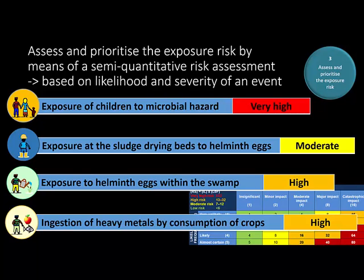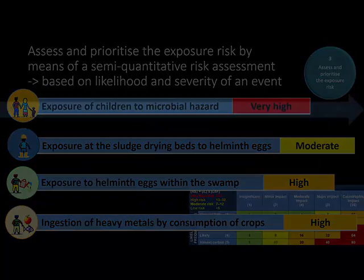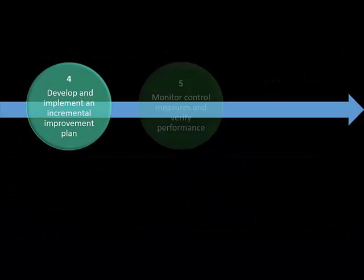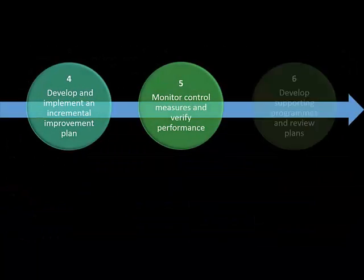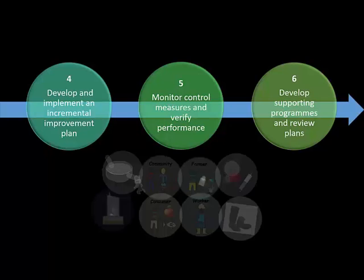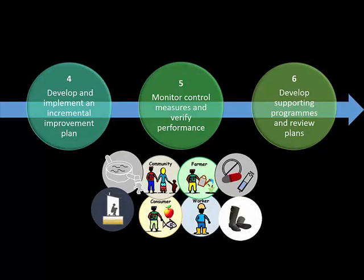Meanwhile, consumers in these areas were at high risk of ingesting heavy metal-containing crops. Subsequently, an incremental improvement plan was developed and implemented to advise on the best actions to take towards reducing risks along the reuse chain.